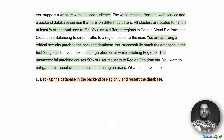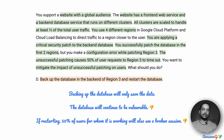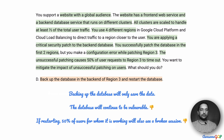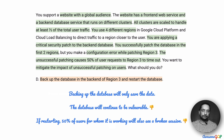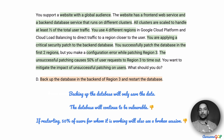Option D suggests backing up the database in the backend of region 3 and restarting the database. The region 3 database has a problem, and the suggestion is to back it up. But in backing it up we are only going to save the data. When we bring that database back on that VM, we are still going to have the security issue — it is a critical security patch we need to apply. This leaves the database still vulnerable to an attack. Also, just restarting the machine will cause a broken session for the 50% of users who have an active session on region 3. So that is also not acceptable.